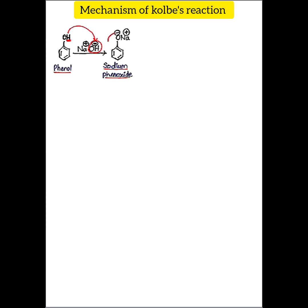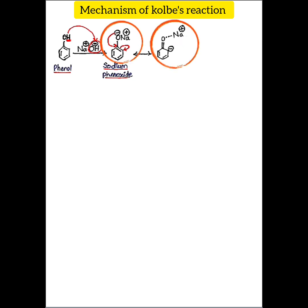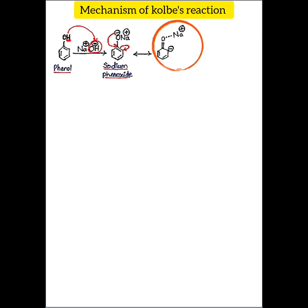The resonance stabilization occurs by movement of the negative charge from the oxygen to the ring carbons and shifting of the pi electrons. This gives a resonance structure in which a negative charge appears on a carbon atom in the ring. Comparing the two structures, this negatively charged carbon is more nucleophilic than the negatively charged oxygen atom, so this carbon acts as the nucleophile.